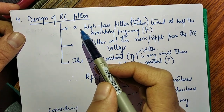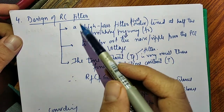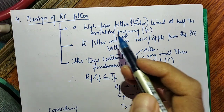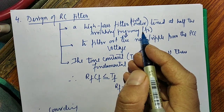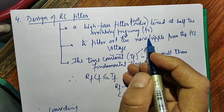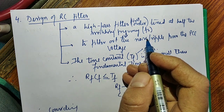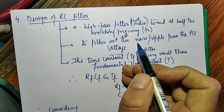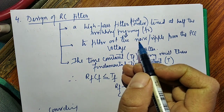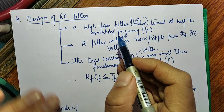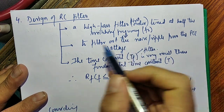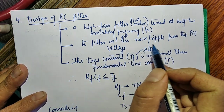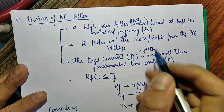Now, the design of the RC filter: this is actually a high-pass, first-order filter tuned at half the switching frequency. For example, if the switching frequency is 10,000 Hz, it is tuned at 5,000 Hz. Its function is to filter out noise or ripple from the DC voltage.